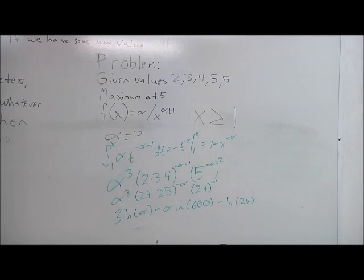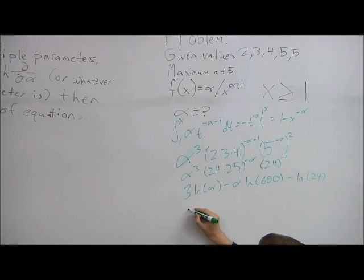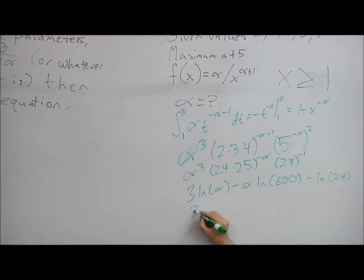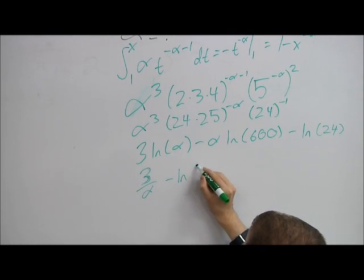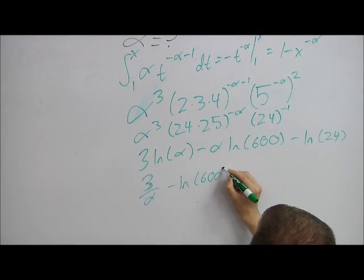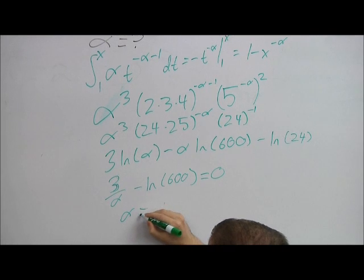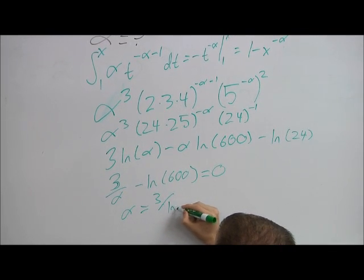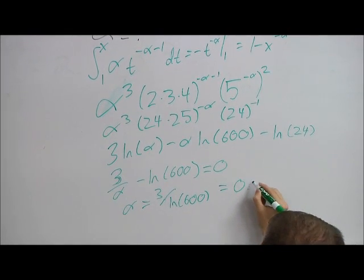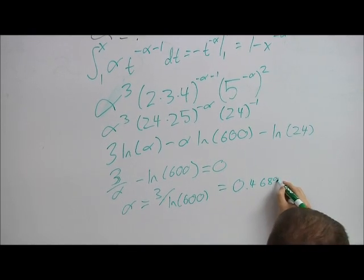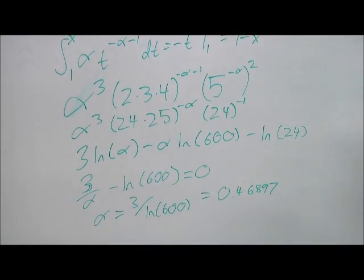Then we take the derivative, which is 3 over alpha minus ln 600. And this bit just disappears. We have to set it all equal to 0. So for alpha, we get alpha equals 3 divided by ln 600, which is 0.46897. So that's how we solve that problem.